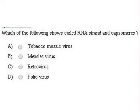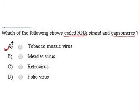Out of the given four viruses, the virus with coiled RNA and capsomeres is TMV — that is, tobacco mosaic virus.